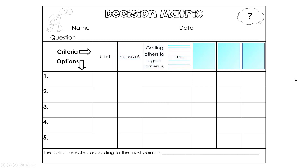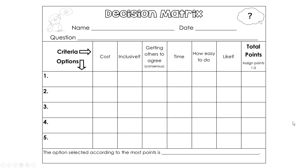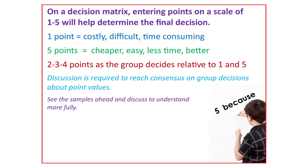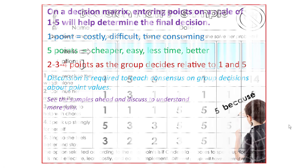They can help decide on criteria on a generic form, but they use criteria and options and a point system so they can arrive at a decision based on a process.